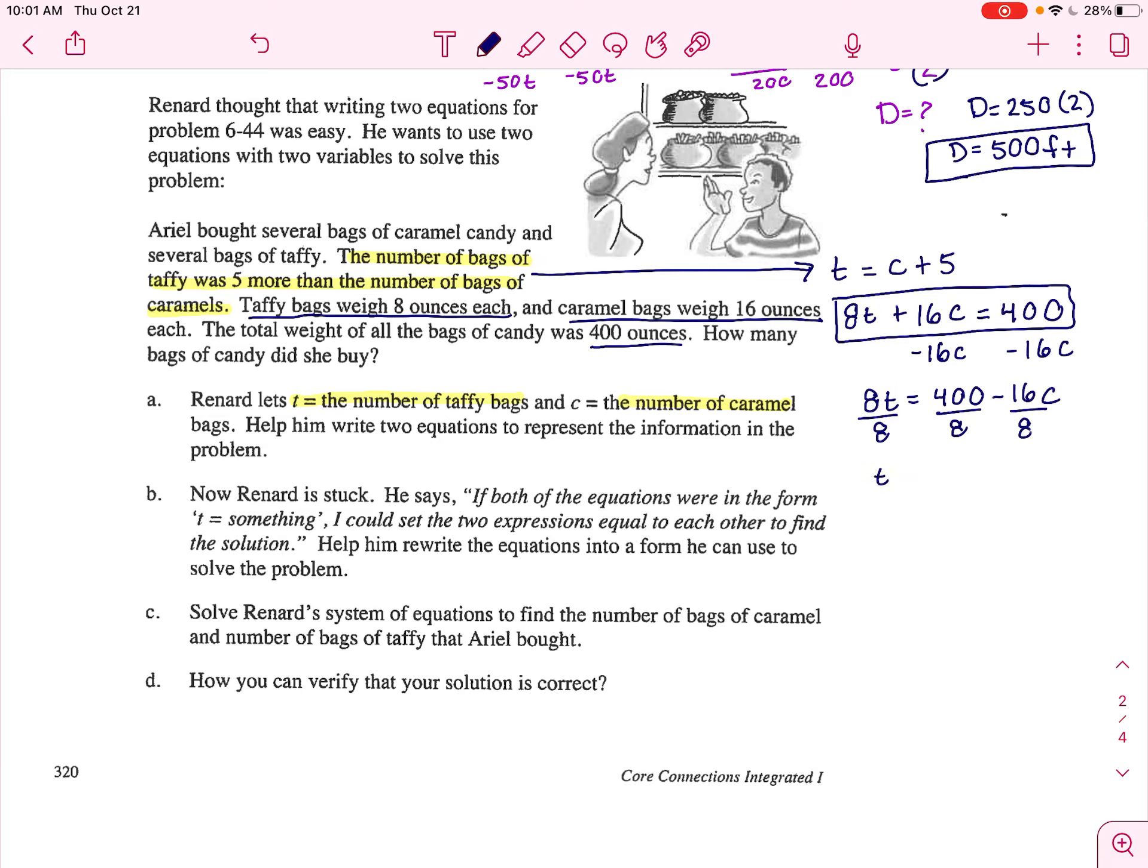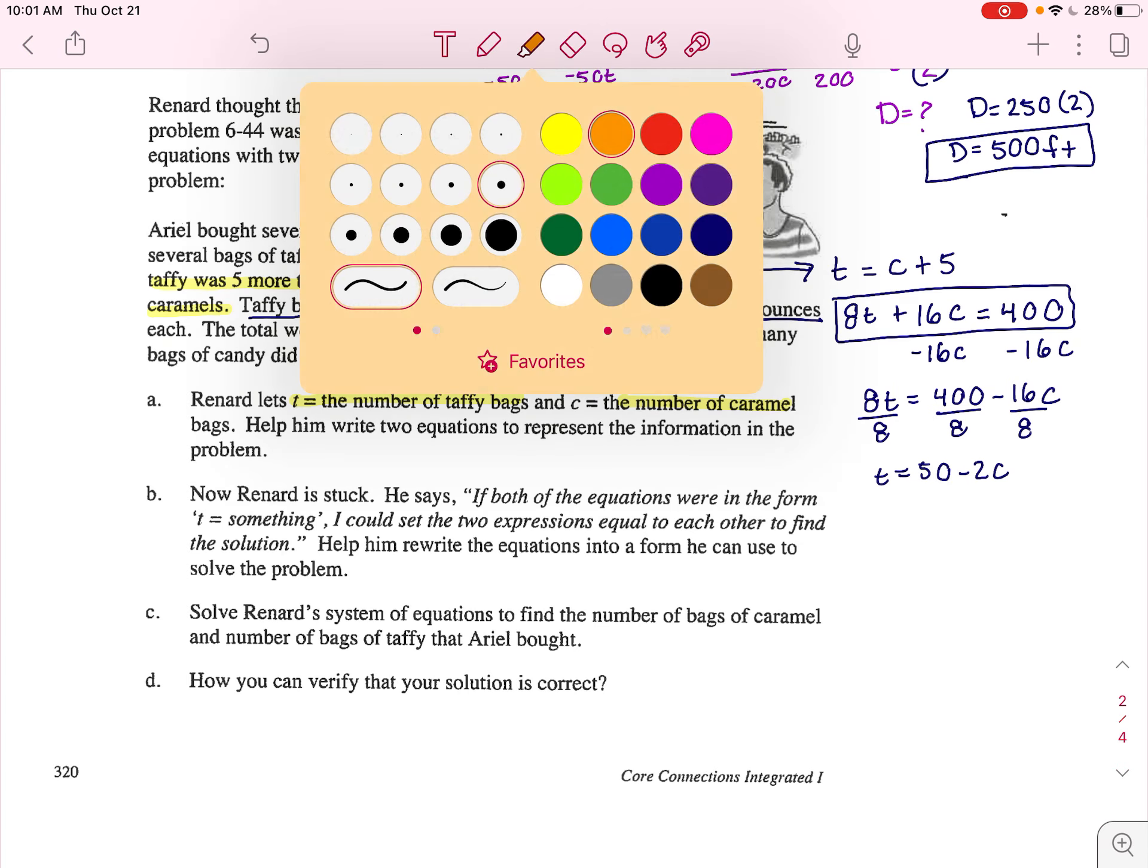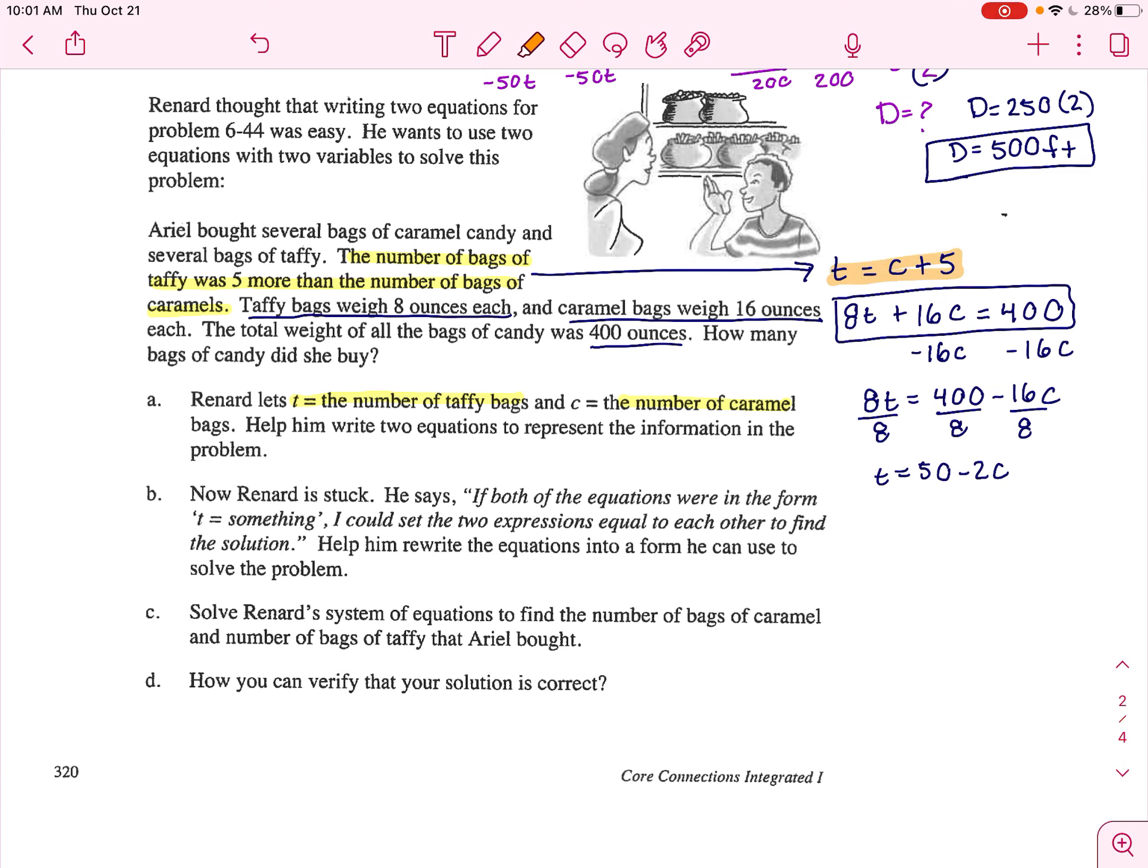I want to solve for T. So if I solve for T, I get that T equals 50 minus 2C. Now we have our two equations and two unknowns, and they're set up to do the equal values method.